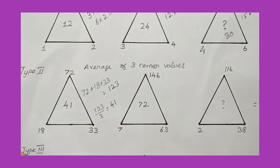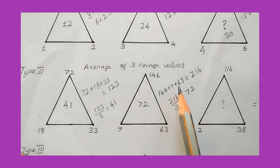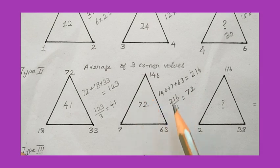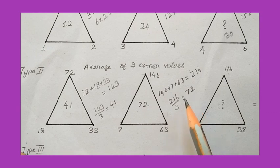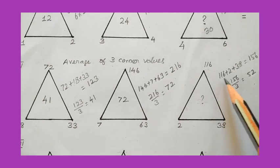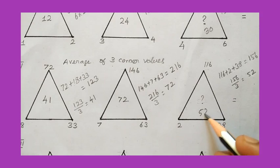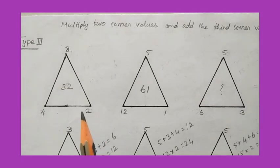For the second triangle, adding the corner values 146 plus 7 plus 63 gives 216. Dividing by 3 gives 72. Both triangles confirm the average logic. Applying it to the third triangle: 116 plus 2 plus 38 gives 156, divided by 3 gives 52. So 52 is the answer.